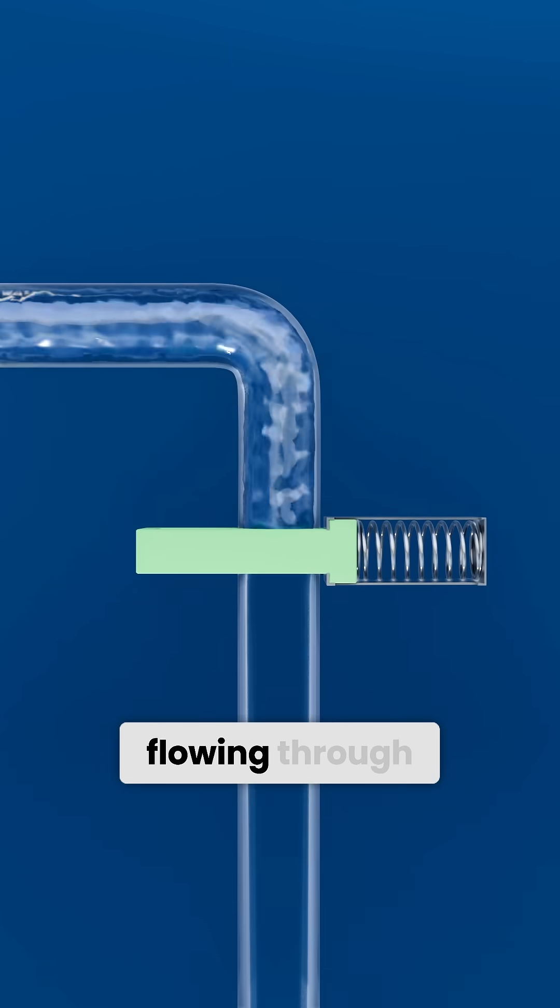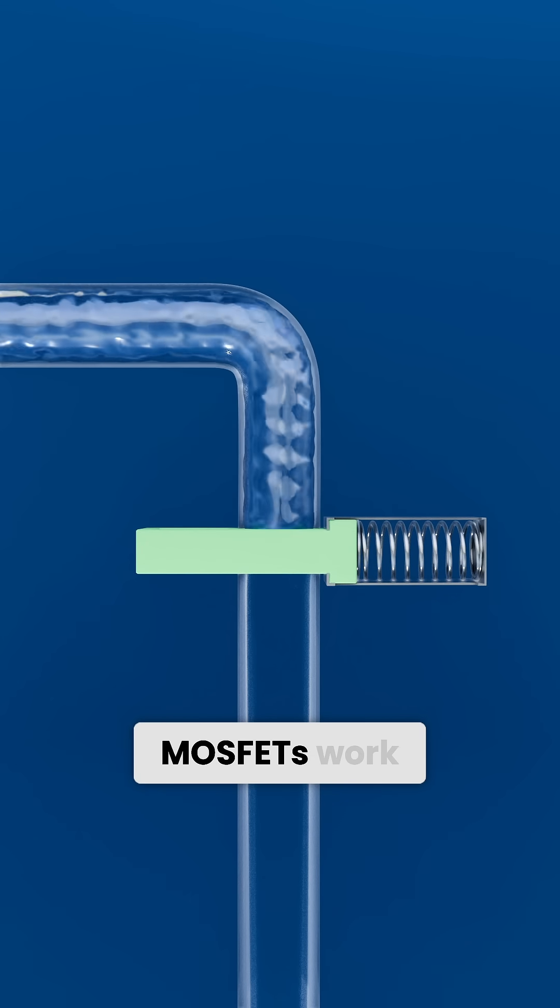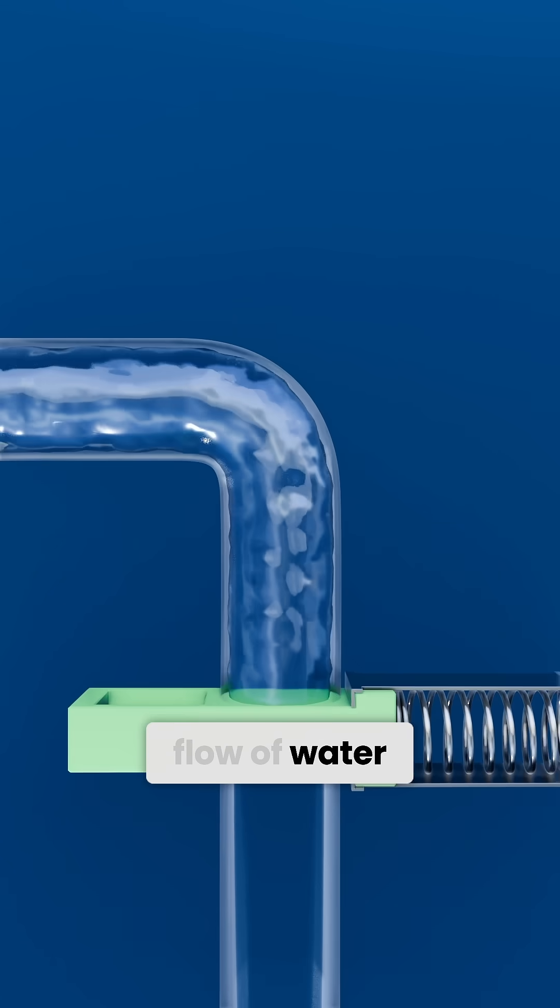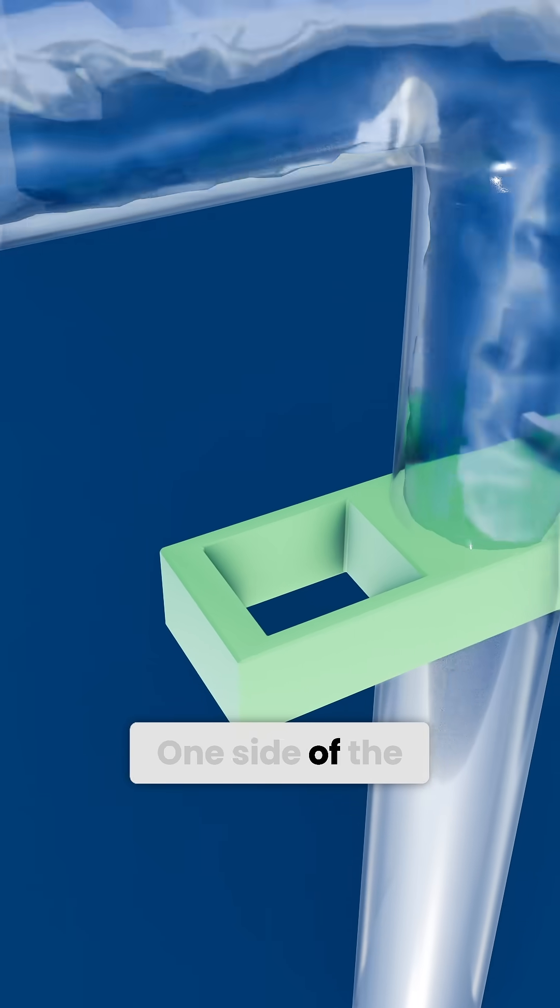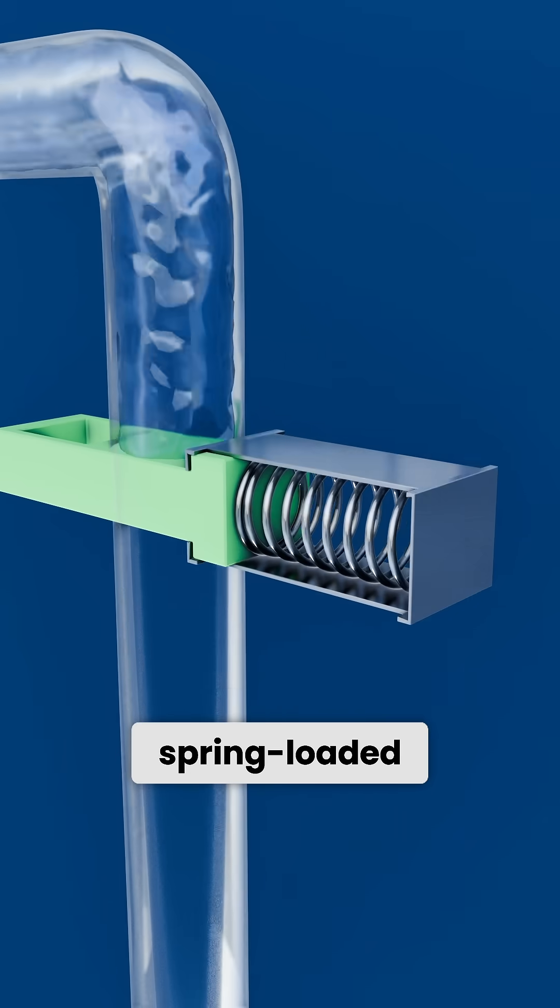Let's use a pipe with water flowing through it to understand how MOSFETs work. We can block the flow of water through the pipe with a plate. One side of the plate can have a hole, and the plate itself can be spring-loaded.